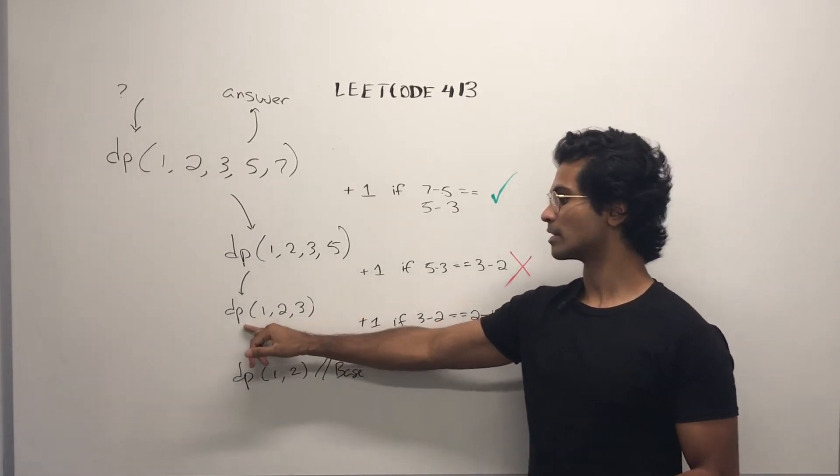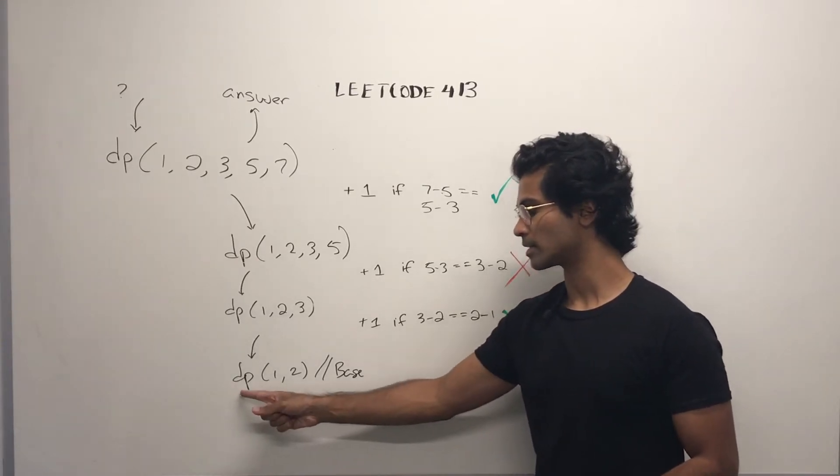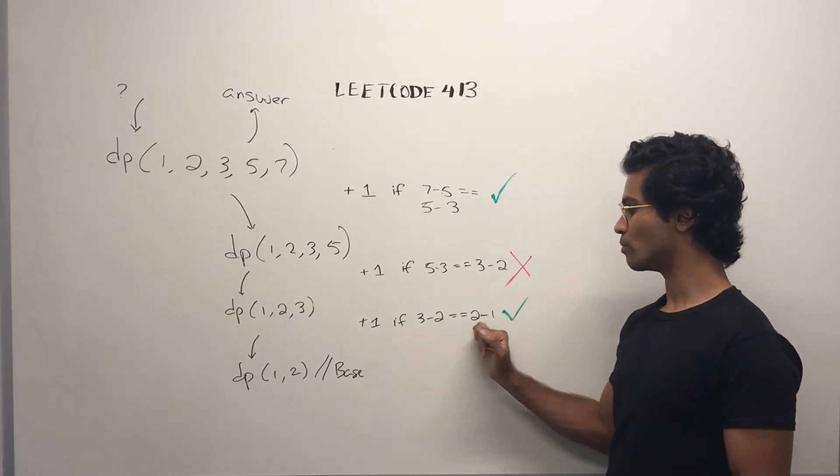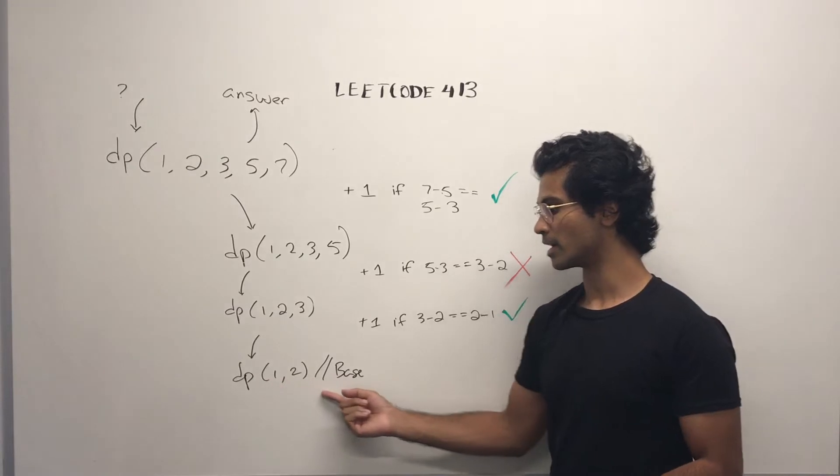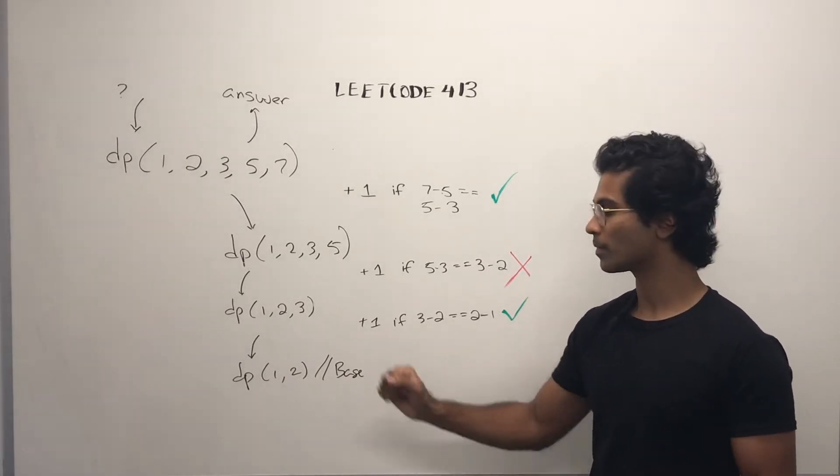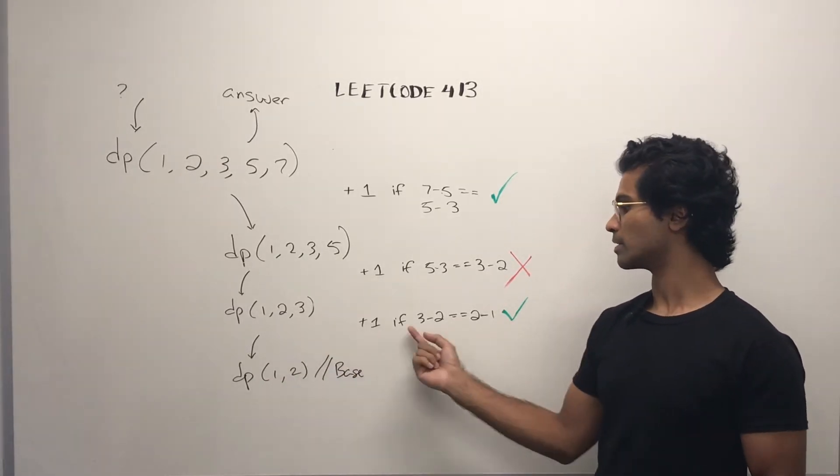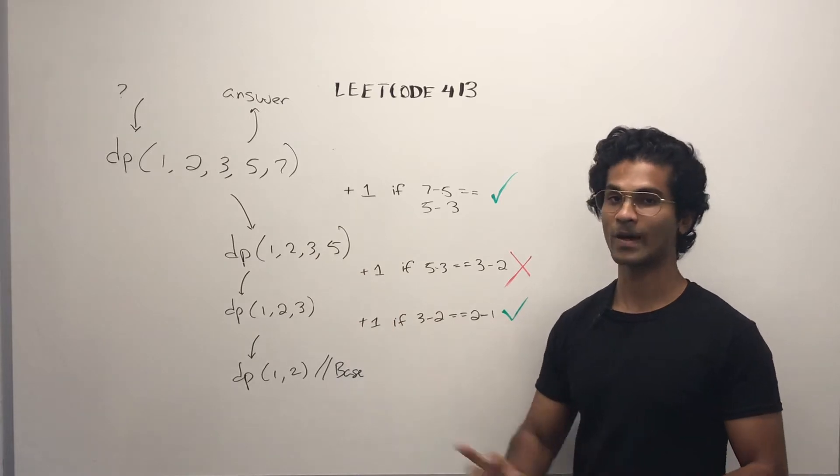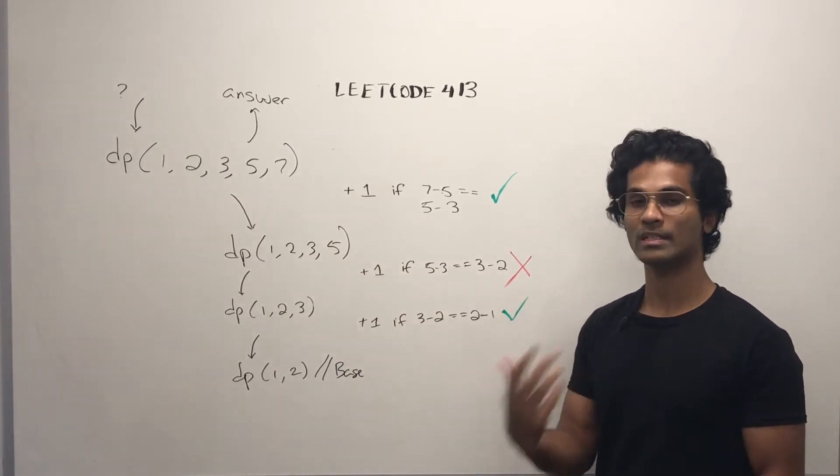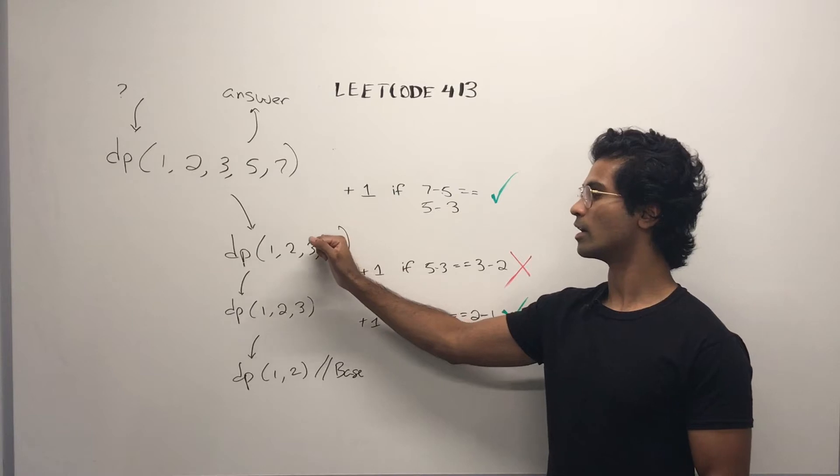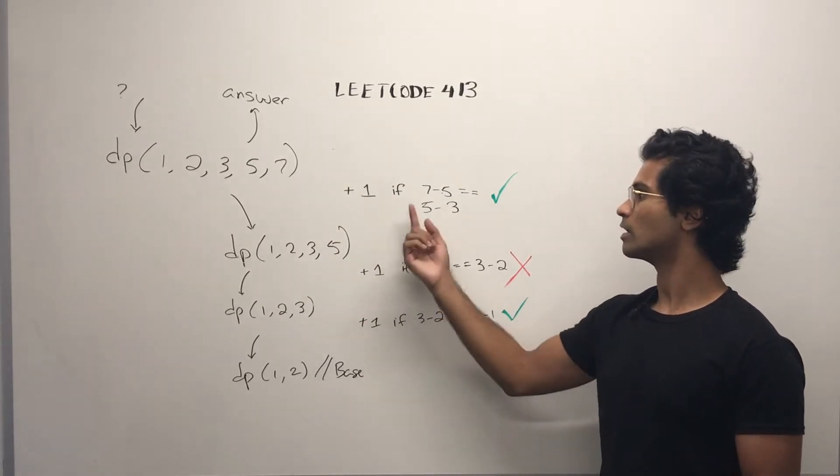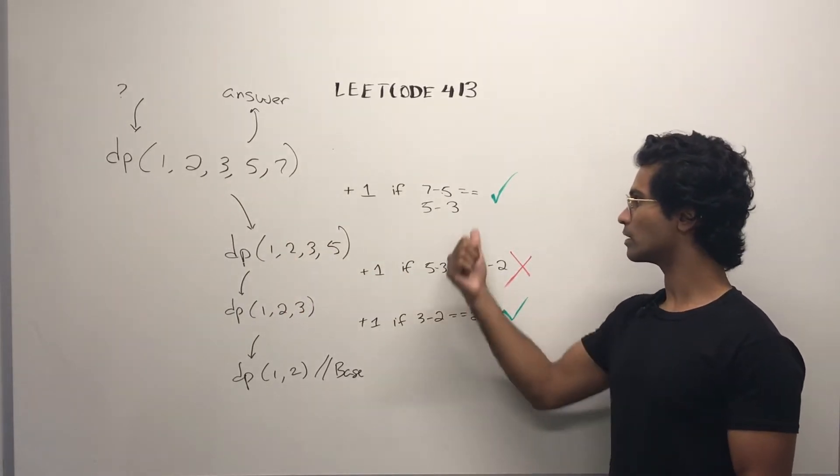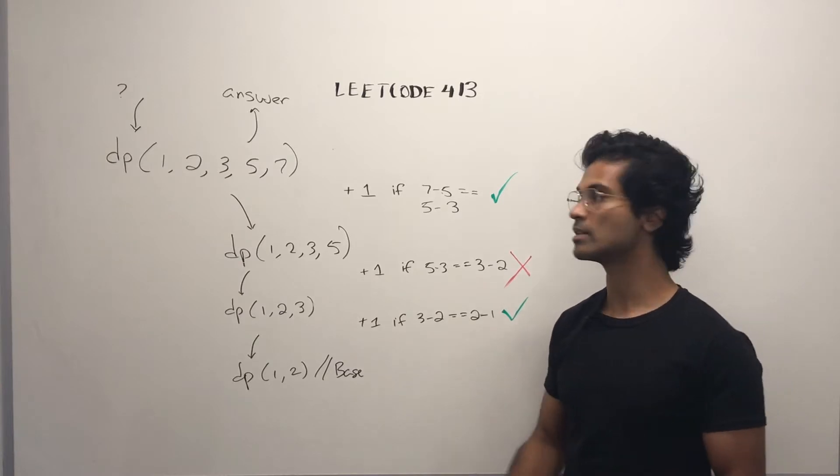So we have the original thing. The number of arithmetic slices of this is going to be the number of arithmetic slices for this plus 1 if 7 minus 5 is the same as 5 minus 3. The difference in that case is 2, so we have plus 1 for that. But hold on. Let's see what else happens. The arithmetic slices for this is going to be the number of arithmetic slices for this plus 1 if 5 minus 3 is equal to 3 minus 2. It's not. So that's where we reset the chain, and we return a value of 0. The number of arithmetic slices for this is going to be the number of arithmetic slices for this plus 1 if 3 minus 2 is equal to 2 minus 1. And in this case, it is. So this is our base case. So we just return 0, and then we're going to add 1 because this is valid. Then when we get up to here, we see that 5 minus 3 is not 3 minus 2. So we reset it, and then we return 0 to here. And then what we're going to do is plus 1 if 7 minus 5 is 5 minus 3, and it is. In total, we have two check marks. So the answer for this is going to be 2.